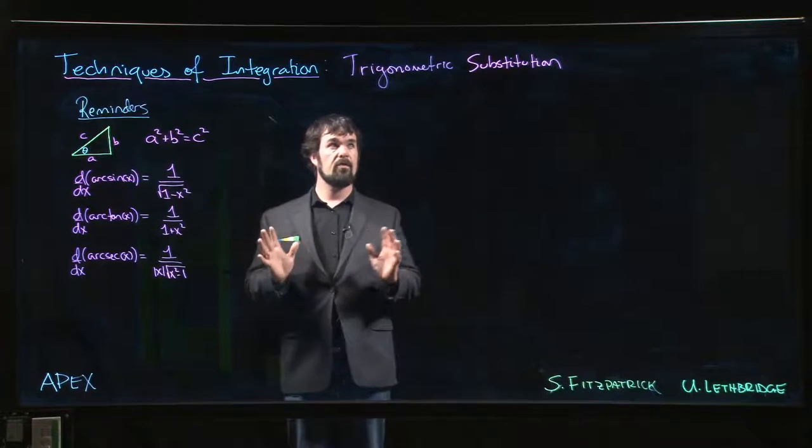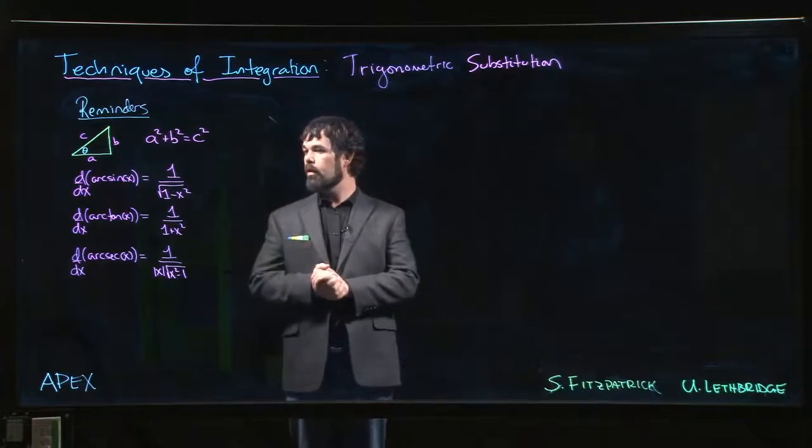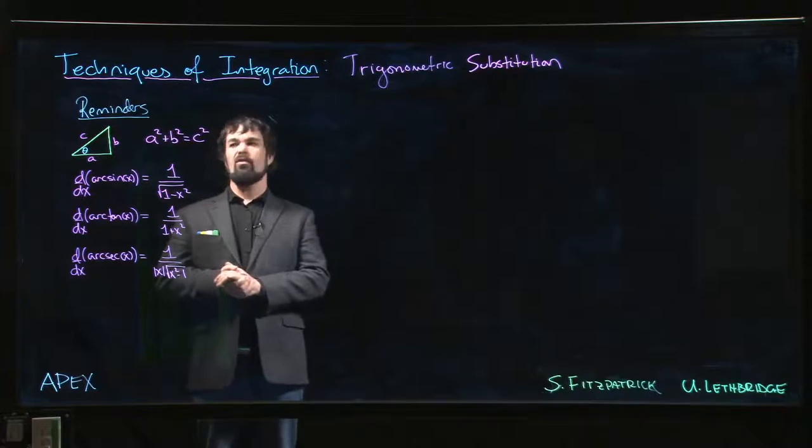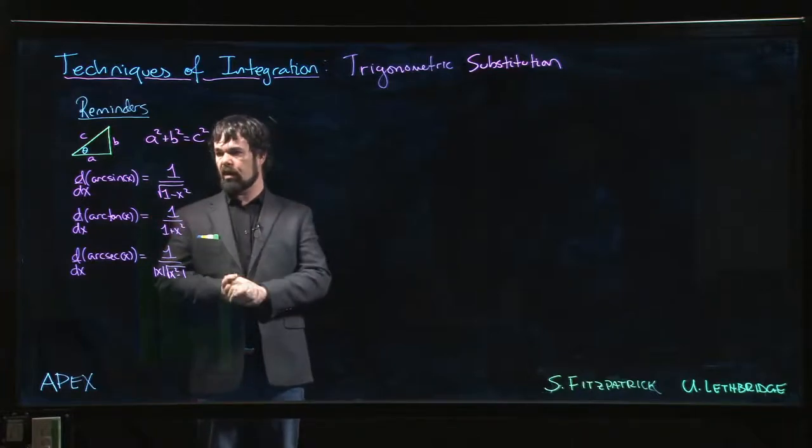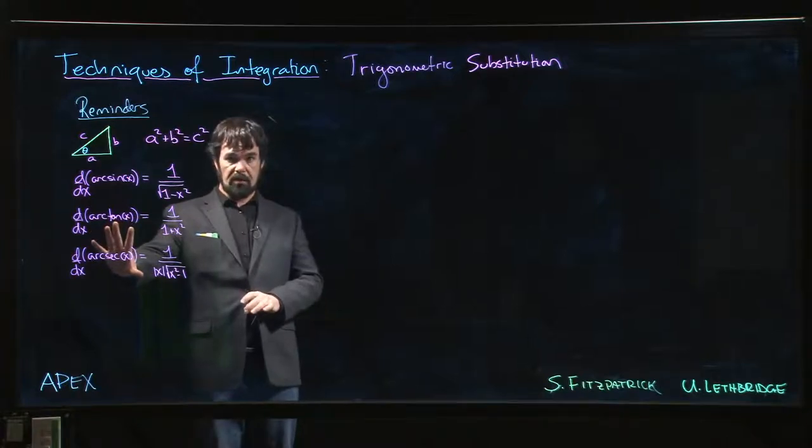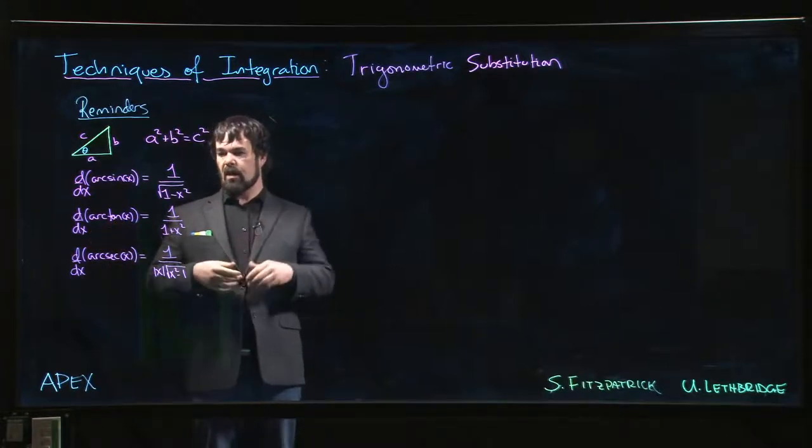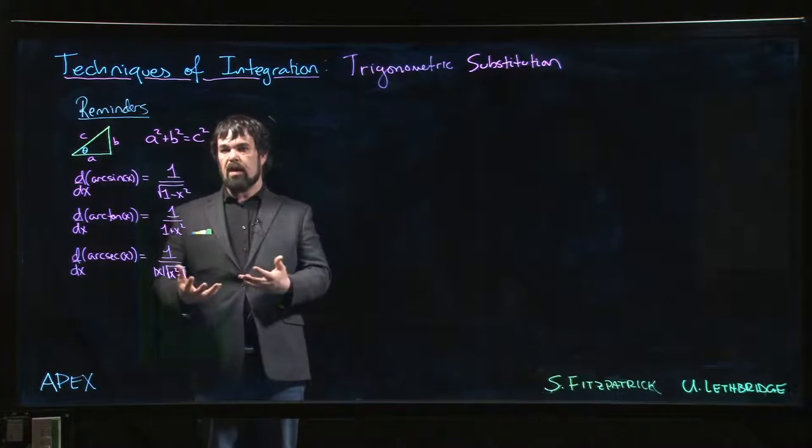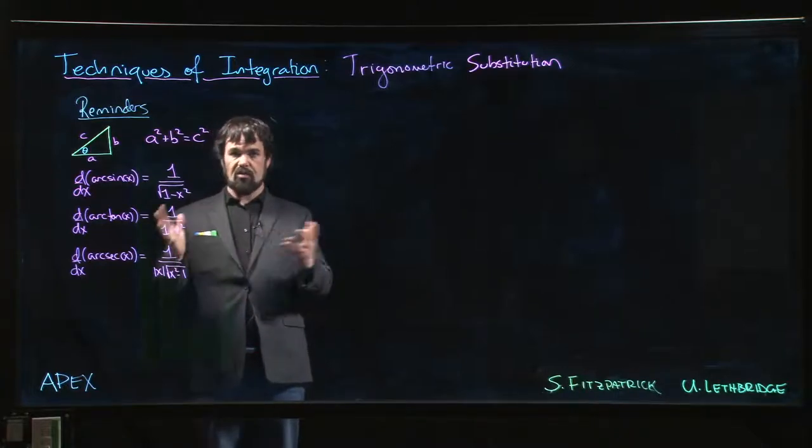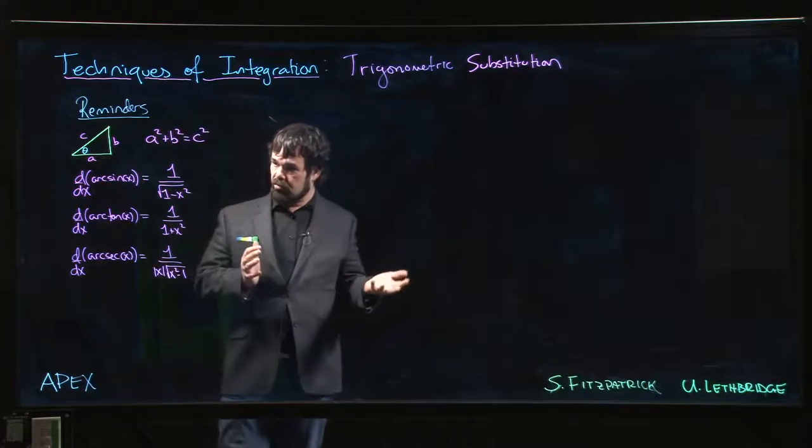The next section we're going to look at is trigonometric substitution. With trigonometric substitution, we are essentially trying to take integrals that have expressions similar to the ones that appear when we take derivatives of inverse trig functions and make substitutions in terms of trig functions that eliminate those algebraic expressions and get us back into something involving trig.